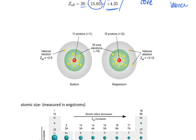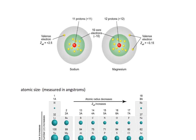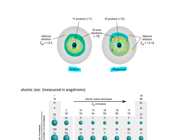Let's look at Z-effective as a trend by comparing sodium and magnesium. Sodium has a nucleus with 11 protons, magnesium has 12 protons. In both examples, you have 10 core electrons — what's changing is the number of valence electrons and the number of protons. Going through the calculations gives plus 2.5 for sodium and positive 3.15 for magnesium. This means there is a trend going across the periodic table that Z-effective increases.